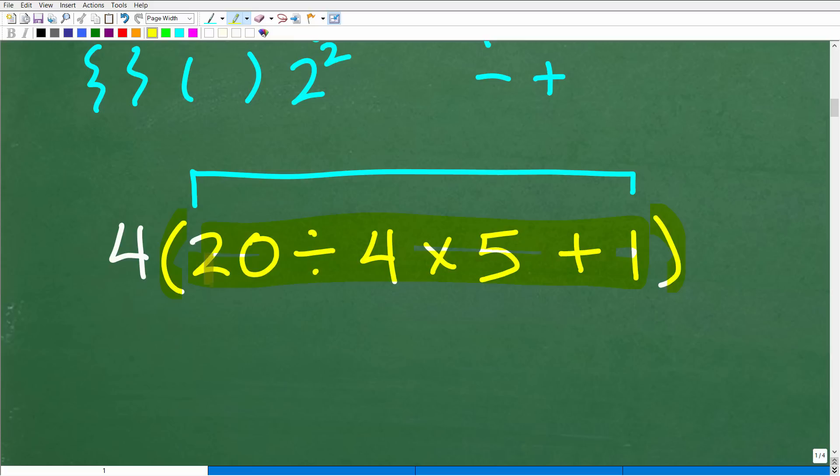So we're going to go inside of the parentheses and take care of all this stuff first. So we have to figure out where to start because it's like a math problem within a math problem. I have 20 divided by 4 times 5 plus 1. Now I'm asking myself, what do I do next?